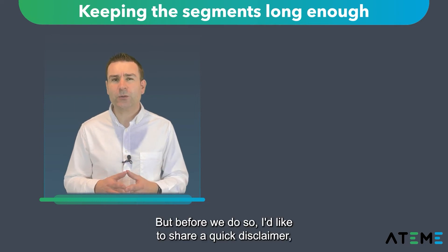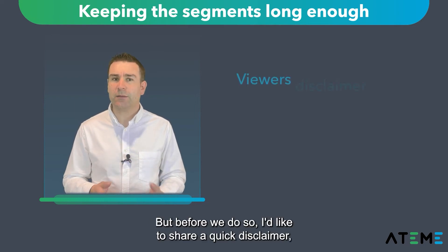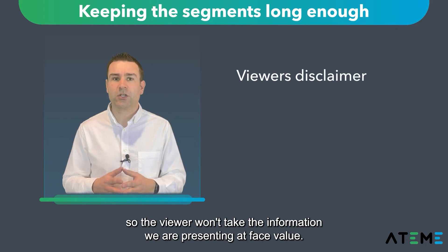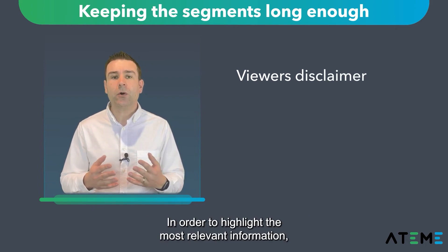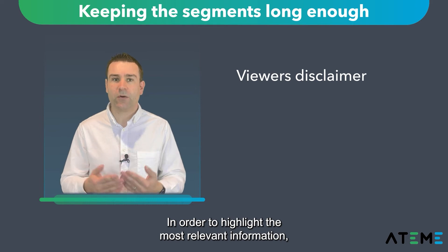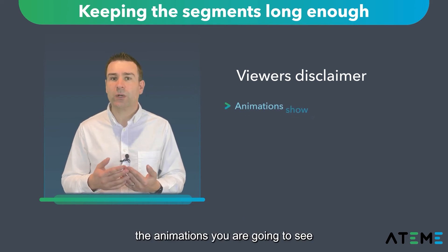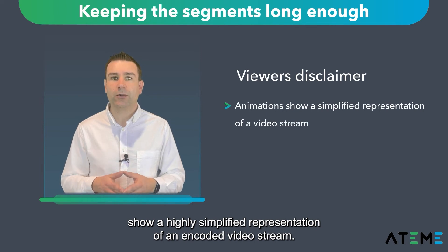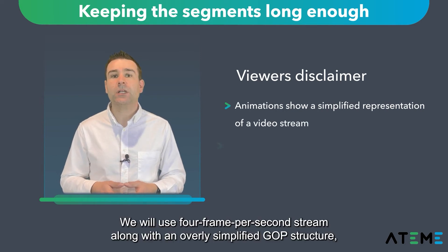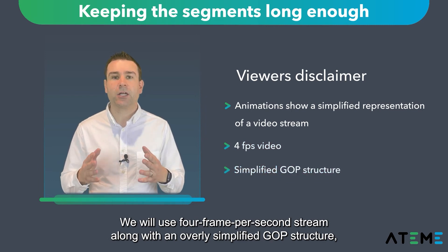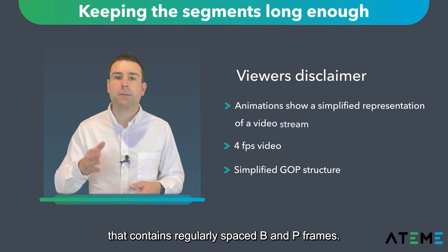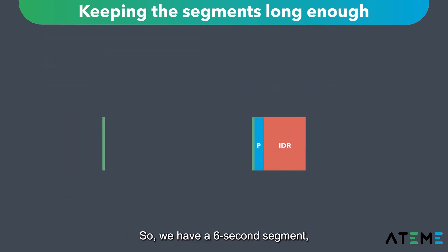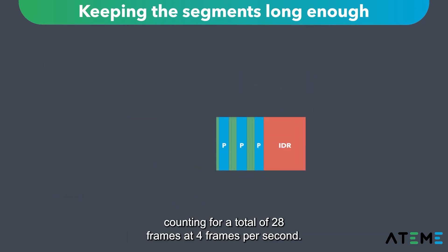Before we do so, I'd like to share a quick disclaimer so the viewer won't take the information we're presenting at face value. In order to highlight the most relevant information, the animations you're going to see show a highly simplified representation of an encoded video stream. We will use four frames per second along with an overly simplified GOP structure that contains regularly spaced B and P frames. We have a six-second segment counting for a total of 28 frames at four frames per second.